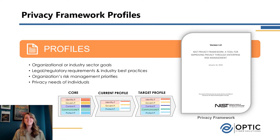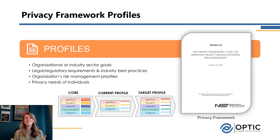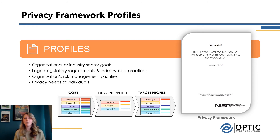Finally, we have the privacy framework profiles. Profiles are really a way to capture all the information we've been talking about — with the core defining those outcomes and the tiers defining how mature or sophisticated we want these practices to be to meet our risk tolerance. We need a place to put that, and a profile is a really great way to capture that information. There are a lot of ways to create a profile — I've seen companies do it as a spreadsheet, which I like because it helps map everything out, and I've seen people use graphics, pie charts, or other ways to represent what you're doing today as it relates back to the core.